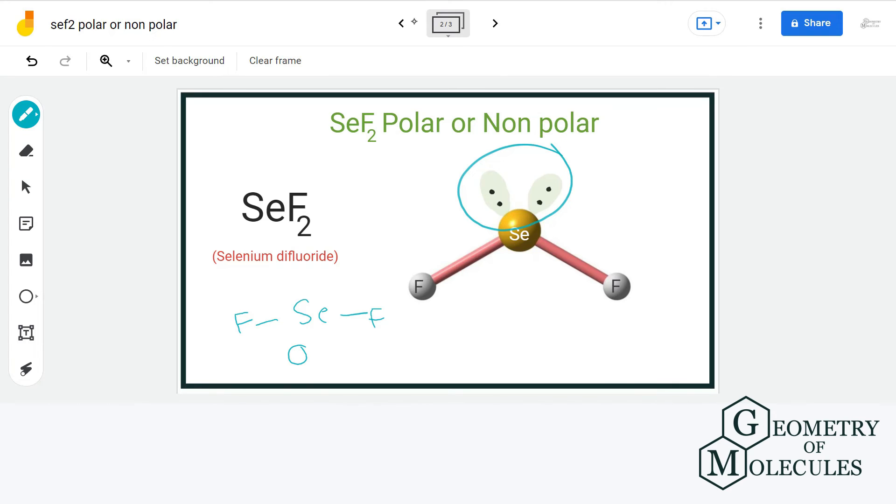But here that is not the case. Thus, there will be a formation of negative pole on fluorine and positive pole on selenium.